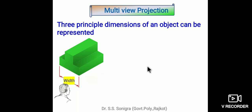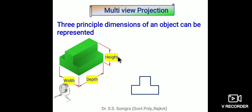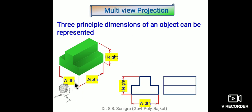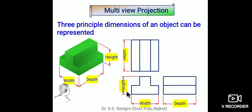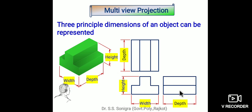Three principal dimensions of an object are represented by width, depth, and height. Suppose this is a reverse T — if we look from the front, its width and height are visible, making this the front view. If we look from the top, the depth is visible: the upper rectangular face and the two rectangular faces are shown. If we look from the right side, the depth becomes the width of the side view, and the rectangles correspond accordingly.